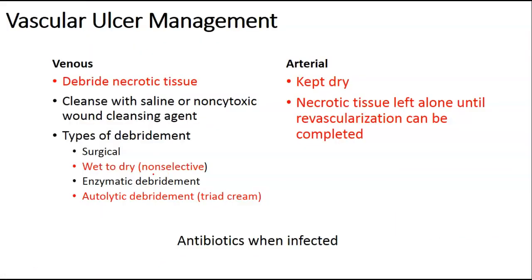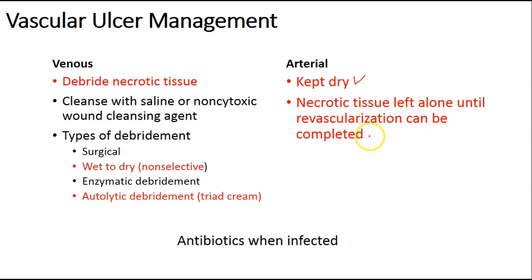Vascular ulcer management: if it's venous, they're typically going to debride the necrotic tissue. Different types of debridement include surgical, wet to dry, and autolytic debridement using Triad cream. If it's arterial, you want to keep it dry. Necrotic tissue is often left alone until revascularization can be completed, because that necrotic tissue creates a barrier and you don't want to remove it until you're actually getting blood flow back to the extremity. Antibiotics are used when infected.